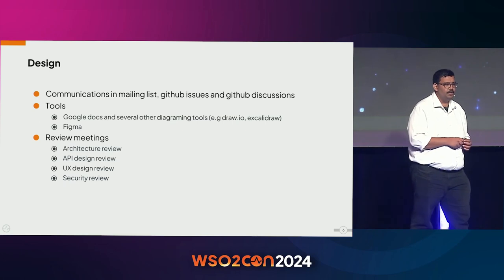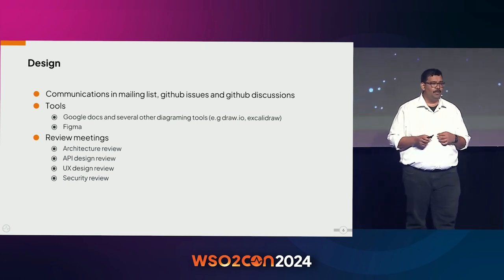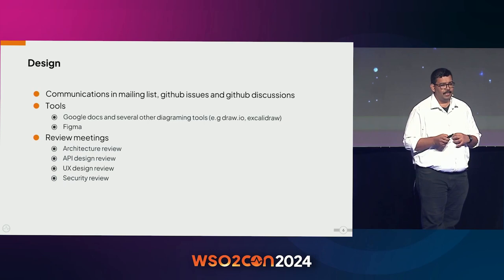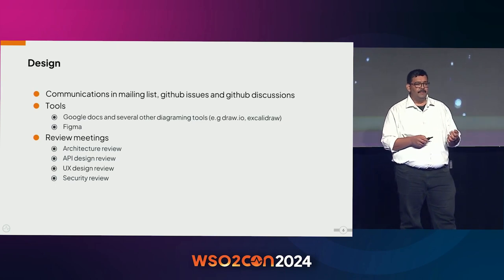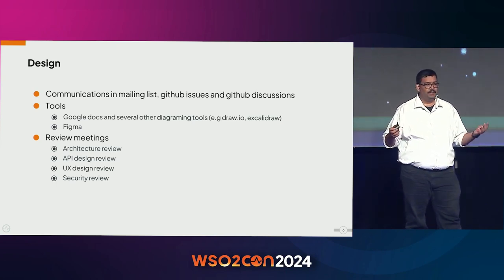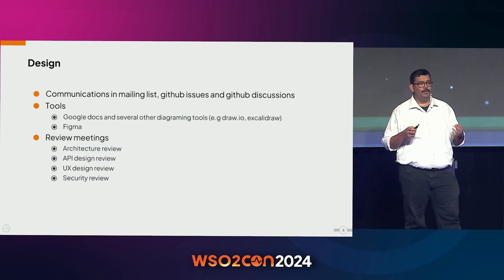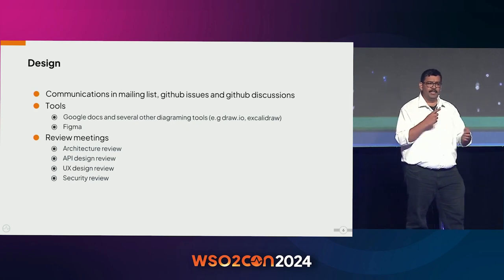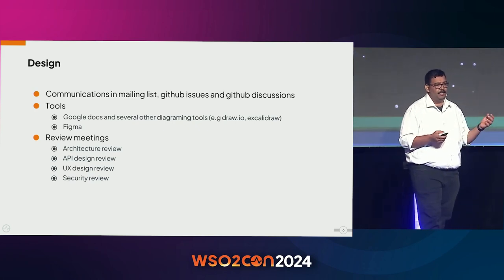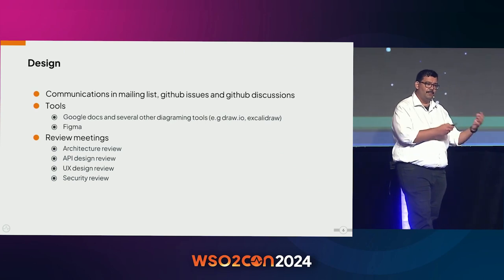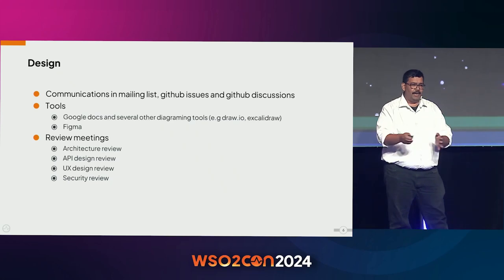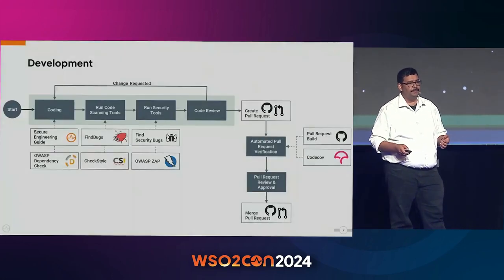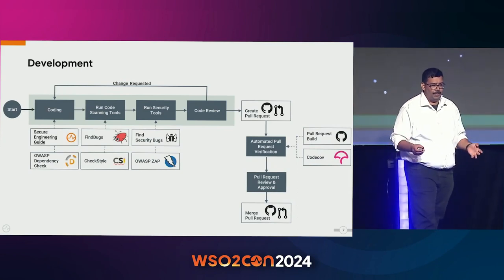We primarily use Figma as a designing tool, Google Docs, or several other diagramming tools on a case-by-case basis. Once the design is available, we do several reviews: architecture review, security review, UX review, and API design review, in order to identify problems. It's an iterative process — we go through the design phase, then start defining the minimum viable product or milestone plans, then start implementing.